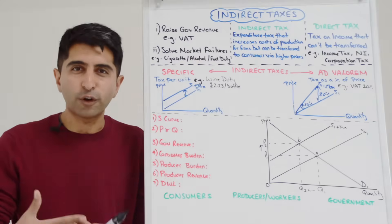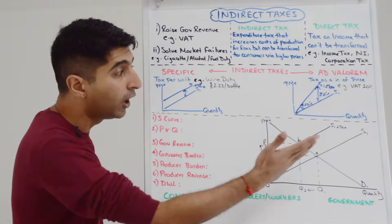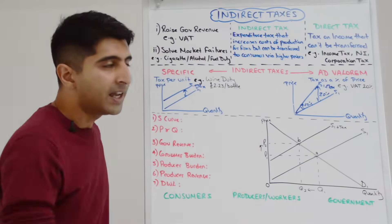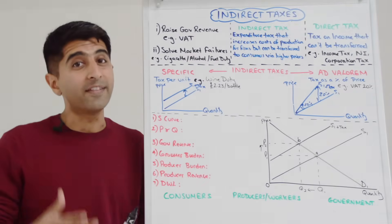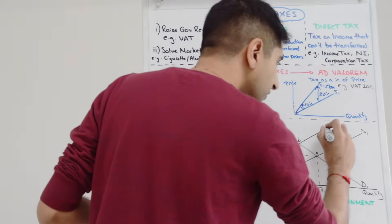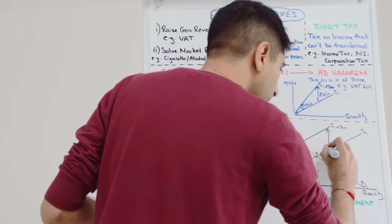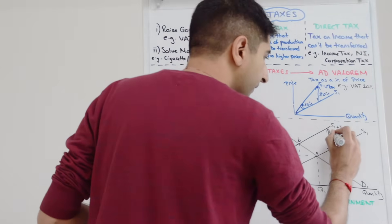Well we know an indirect tax will increase cost of production for firms, so the supply curve will shift to the left here from S1 to S1 plus tax. But if we're being hyper technical, we should really say the supply curve will shift upwards.